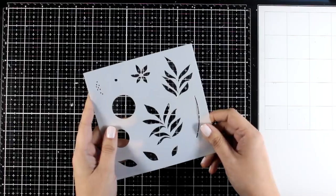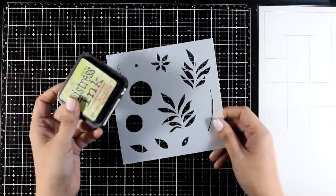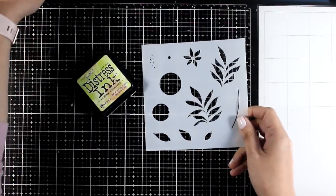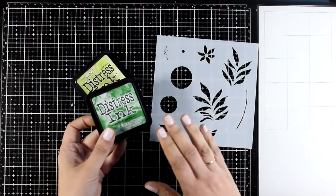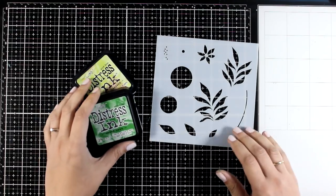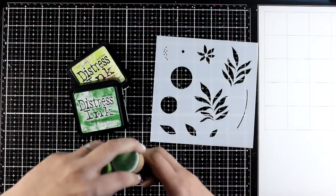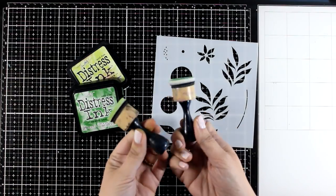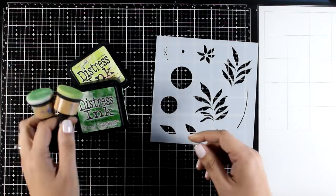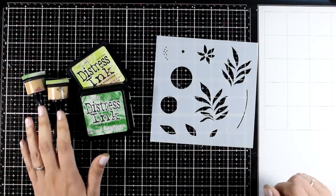You don't need any fancy supplies for that. Your distress inks will do the trick, and you can definitely do this technique with your oxide inks. You don't need any fancy tools again, I'm just going to use my good old blending tools, so just go ahead and use any blending tool that you have.